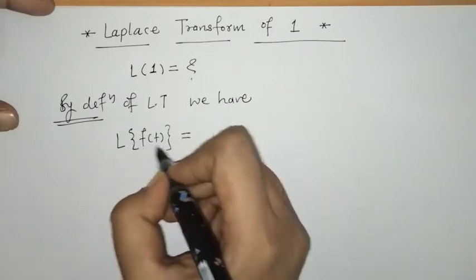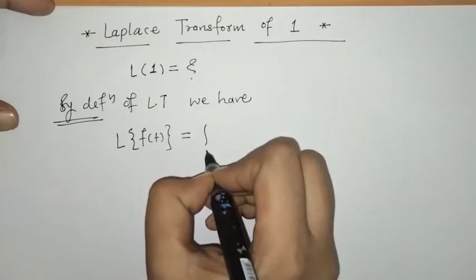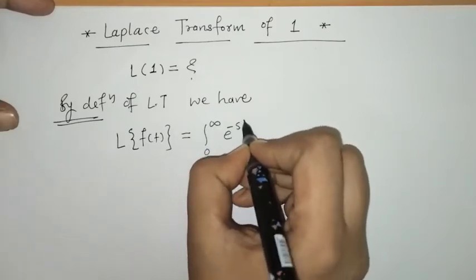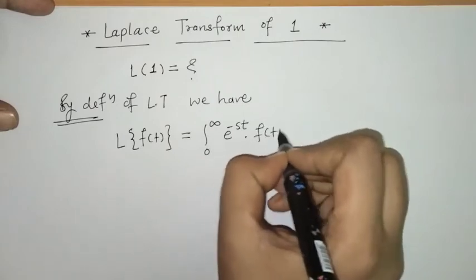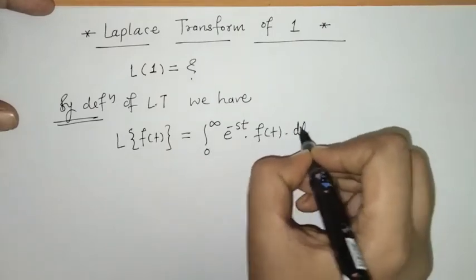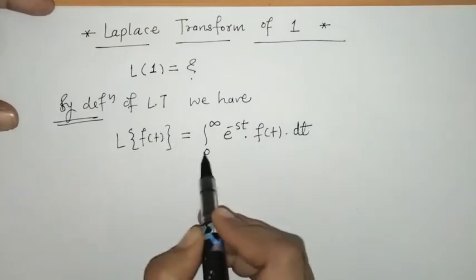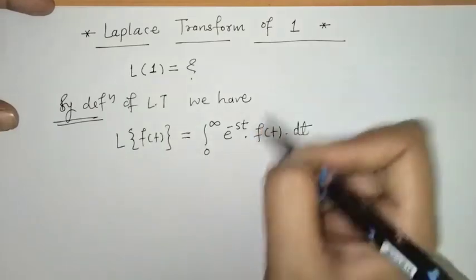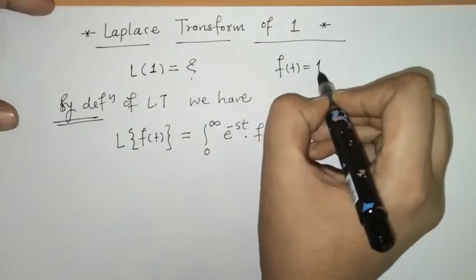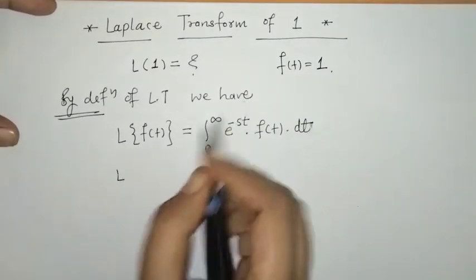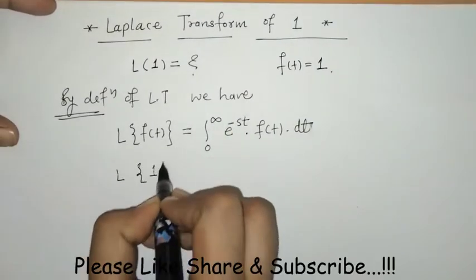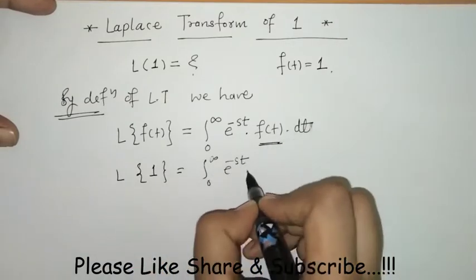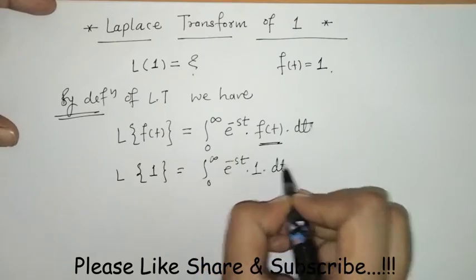The Laplace transform of f(t) is the integral within limits 0 to infinity of e raised to minus st times f(t) with respect to t. By using this definition we have to find the Laplace transform of 1, which means f(t) is 1 here, so we will put f(t) equals 1.